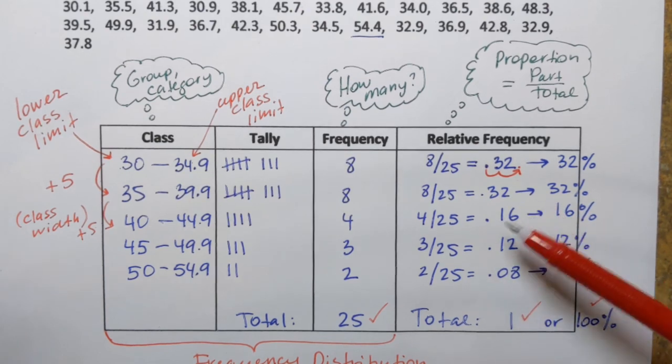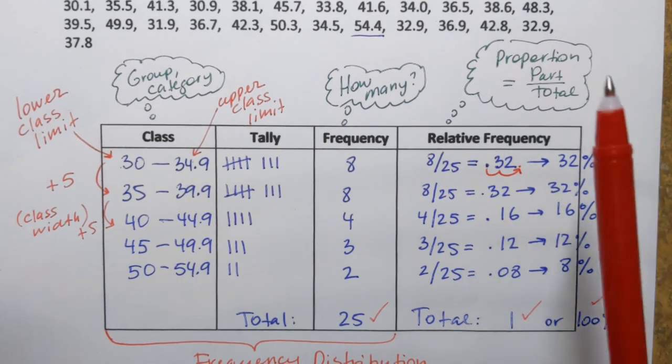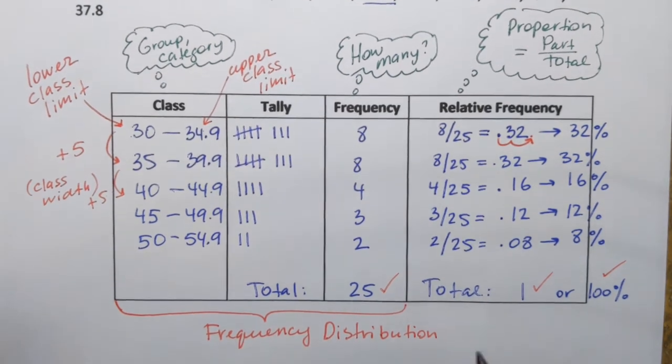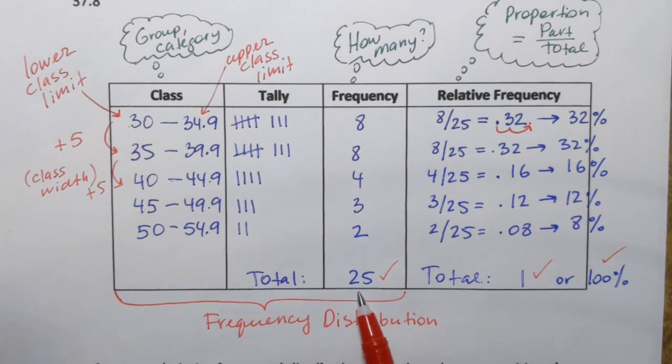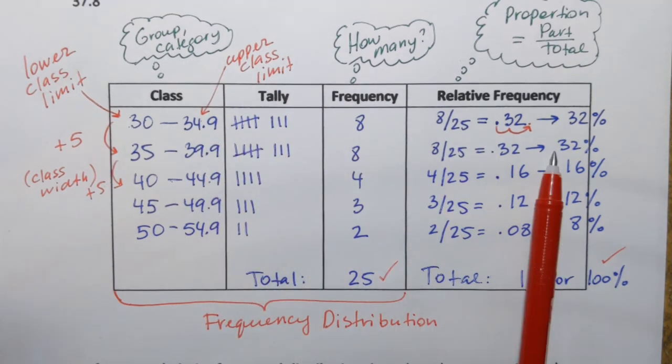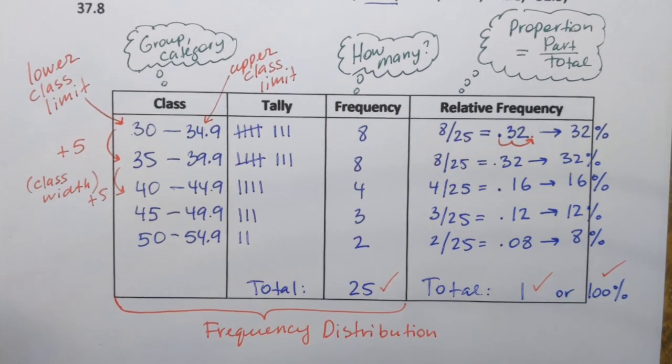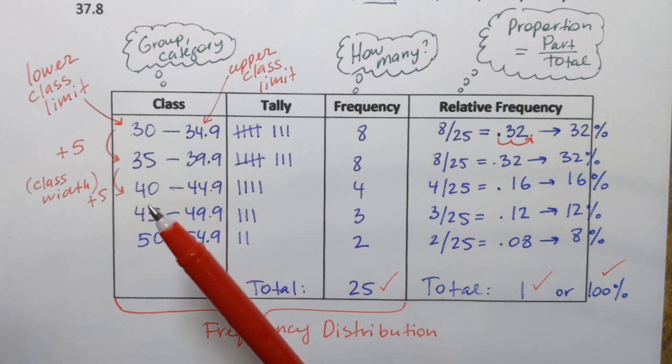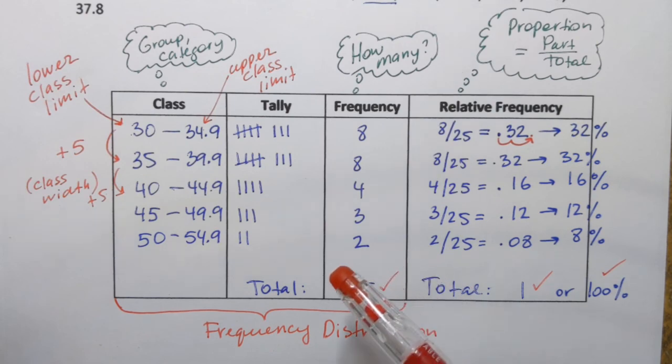Okay, so that's how you compute relative frequency. And relative frequencies, along with the corresponding classes, represent relative frequency distribution. So similar idea. Here we talked about frequency distribution. Now we can talk about relative frequency distribution. So that is the way to organize or one of the ways to organize quantitative data by constructing frequency distribution or relative frequency distribution tables. And next, using these tables, we can construct a special graph that's called a histogram. We're going to see how it's done in the next video.